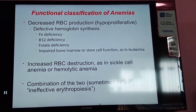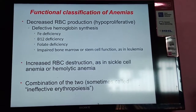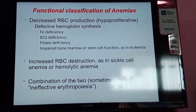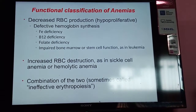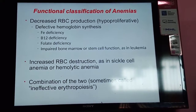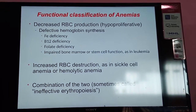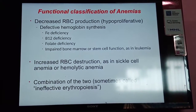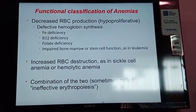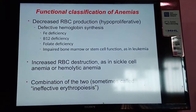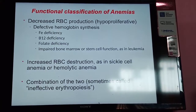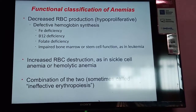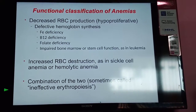The functional classification of anemia includes: hypoproliferative, in which there is decreased RBC production due to defective hemoglobin synthesis — seen in iron deficiency, B12 deficiency, folate deficiency, and impaired bone marrow or stem cell function as in leukemia; increased RBC destruction or hemolysis, seen in sickle cell anemia and hemolytic anemias; and a combination of both, sometimes called ineffective hemoglobin synthesis.